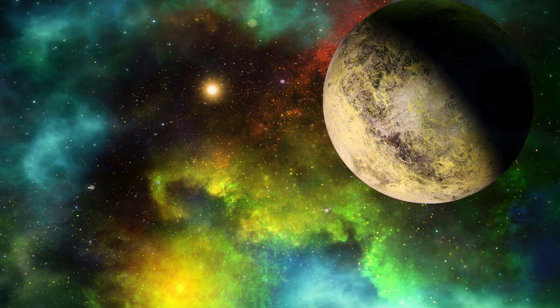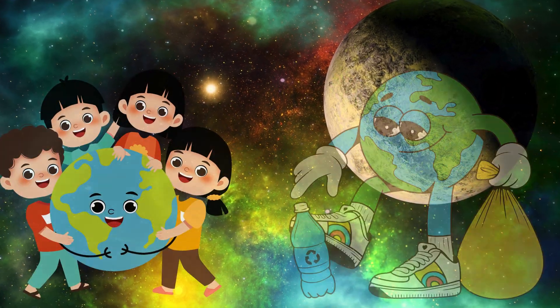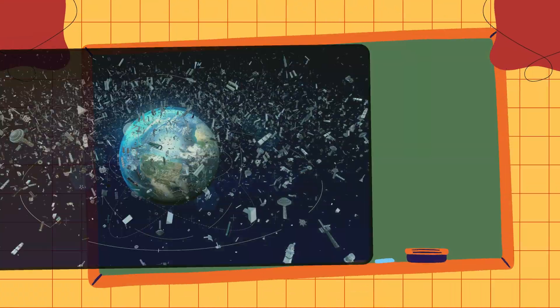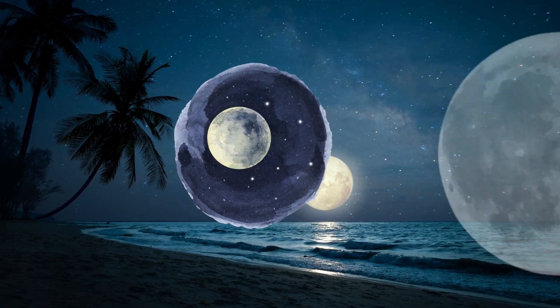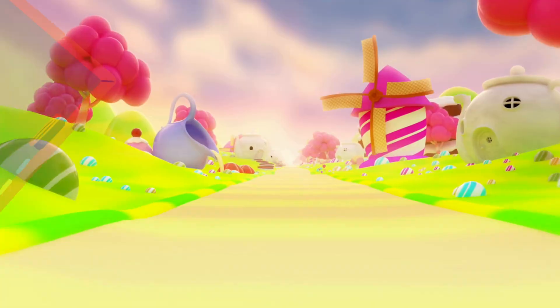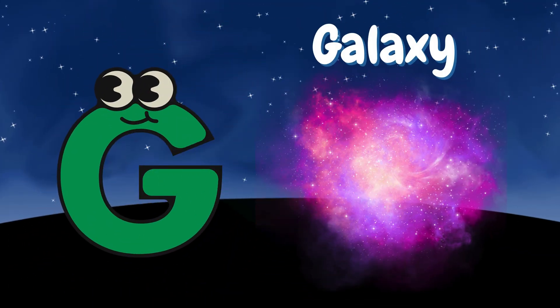E is for Earth. Earth is our blue home full of land, water and life. F is for full moon. The full moon smiles bright and lights up the night.